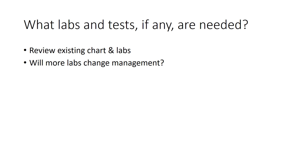Once you've done history and physical exam, think about what labs and tests are necessary. Review the existing chart and labs. When ordering tests, think about how it's going to change management. For someone with end-stage renal disease, whether their potassium is 4.5 versus 6 really matters — you may need to get an EKG, and if you see peaked T-waves, does this procedure even need to occur? Or did they just have dialysis and they're not fluid overloaded?